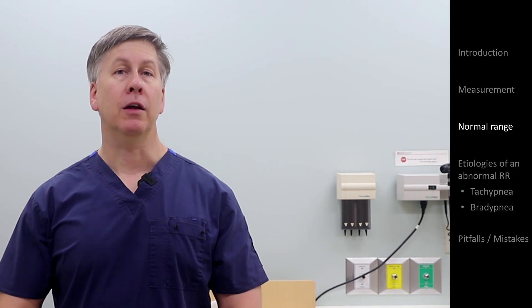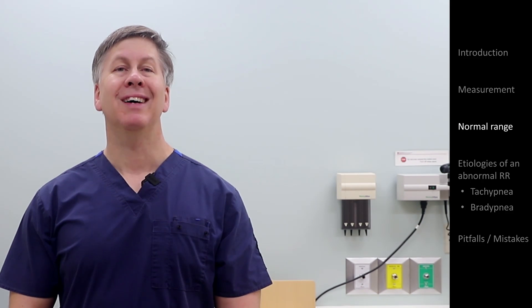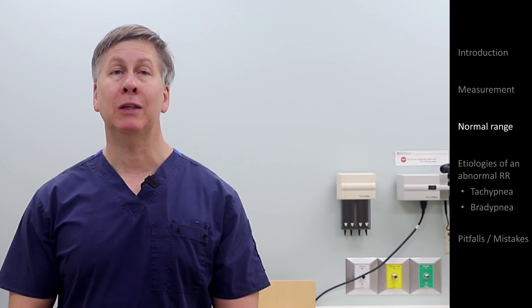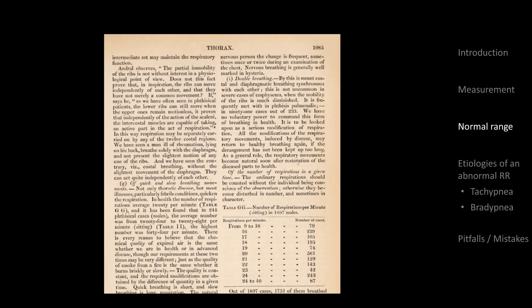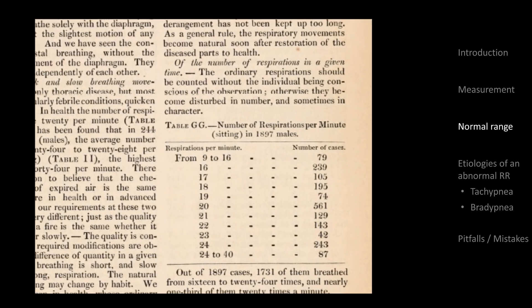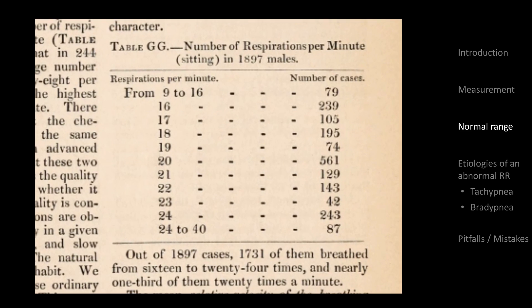And finally, the only study of more than 75 non-elderly non-emergency room patients is — and I kid you not — a physiology textbook from 1846 that published the following summary of respiratory rates in 1900 adult men and concluded that most of them fell into the range of 16 to 24, without any formal statistical analysis, because the concept of the standard deviation would not even be invented for another 50 years. That's really the best primary data that's out there.